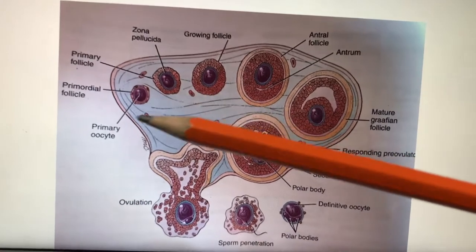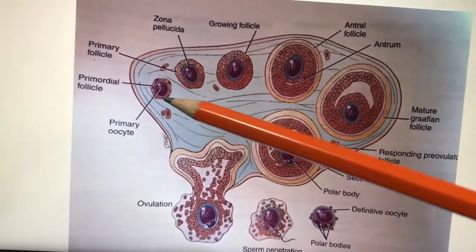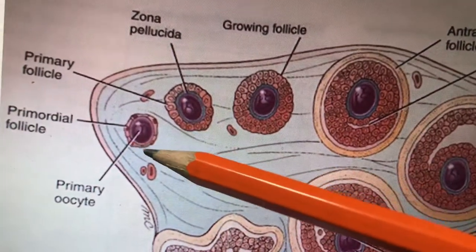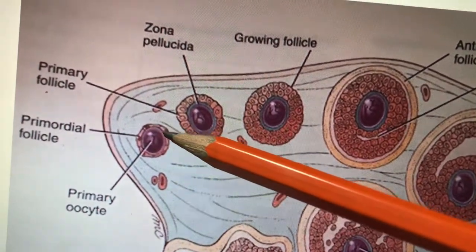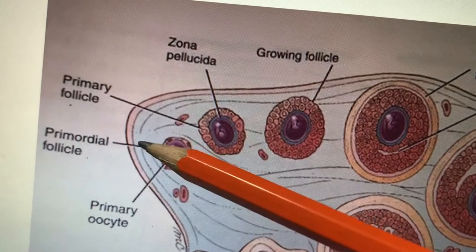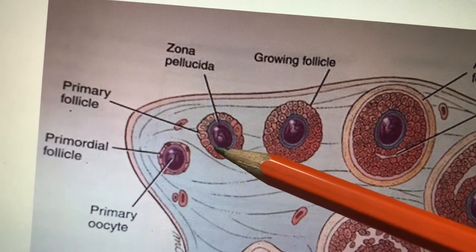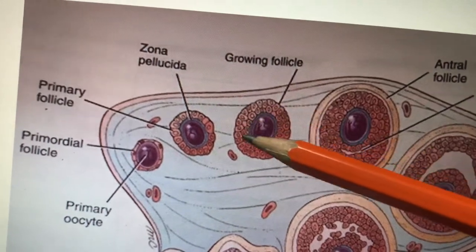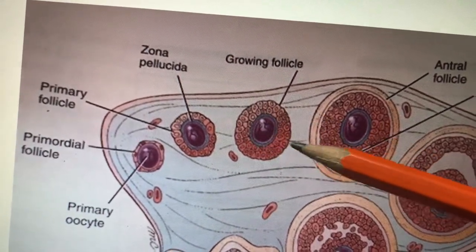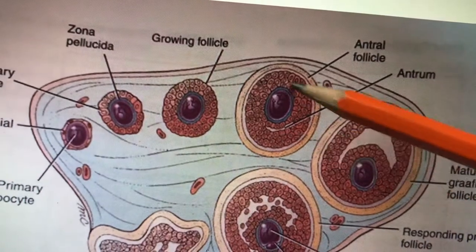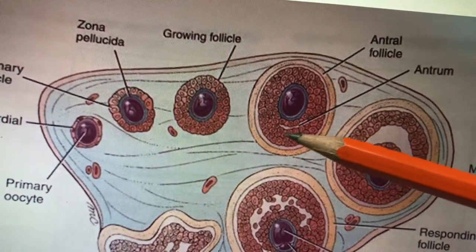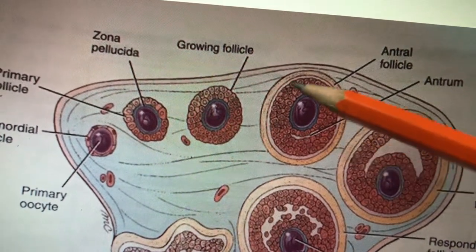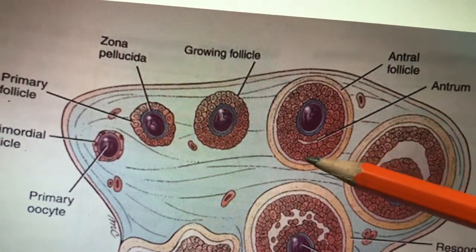The embryogenesis of the first few weeks will start with the oocyte. It is called the primary oocyte. Initially the oocyte is lined by simple squamous cells — that is called the primordial follicle. Then it becomes cuboidal — that is called the primary follicle. Then with multiple layers it is called the secondary follicle. When you call it a secondary follicle, it means you should have an antrum. If antrum is present, that is called a secondary follicle.